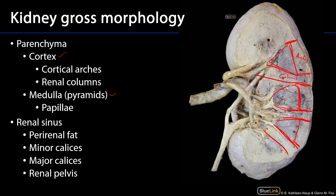Those collecting ducts coalesce into regions called the renal papillae. It is at the papilla that there are no longer any physiological exchanges of materials between peritubular capillaries and nephron tubes. What was filtrate is now urine at the level of the renal papilla.